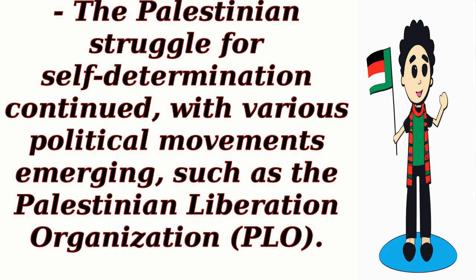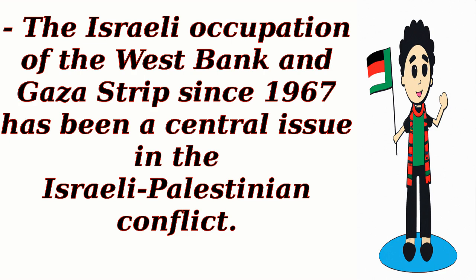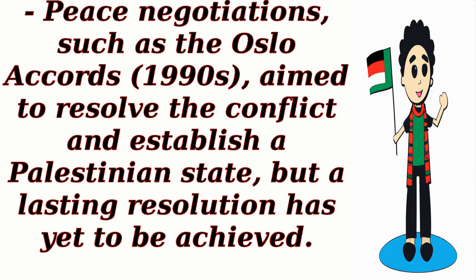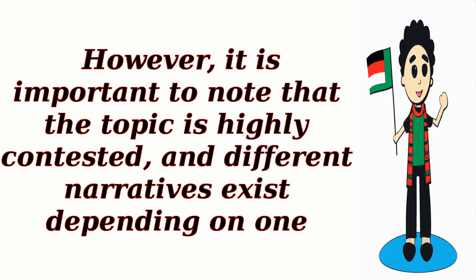The Palestinian struggle for self-determination continued, with various political movements emerging, such as the Palestinian Liberation Organization. Several conflicts, such as the Six-Day War and the Yom Kippur War, further shaped the situation in the region. The Israeli occupation of the West Bank and Gaza Strip since 1967 has been a central issue in the Israeli-Palestinian conflict. Peace negotiations, such as the Oslo Accords, aimed to resolve the conflict and establish a Palestinian state, but a lasting resolution has yet to be achieved. It is important to note that the topic is highly contested, and different narratives exist.